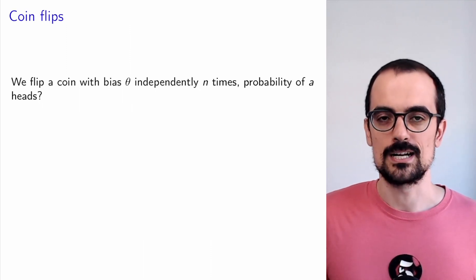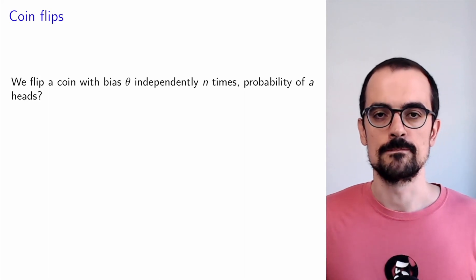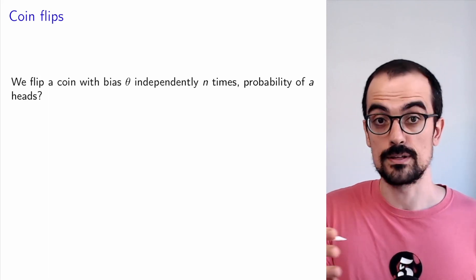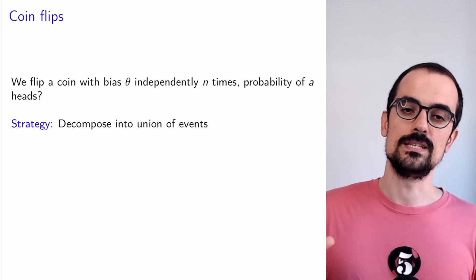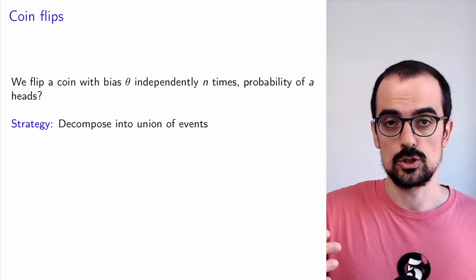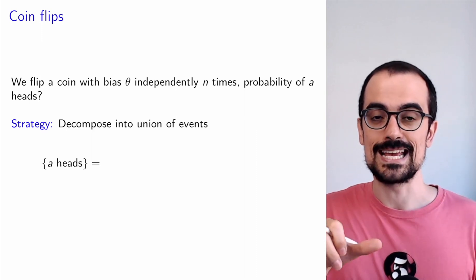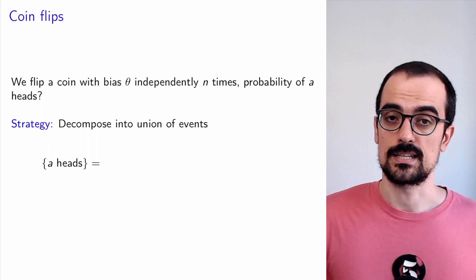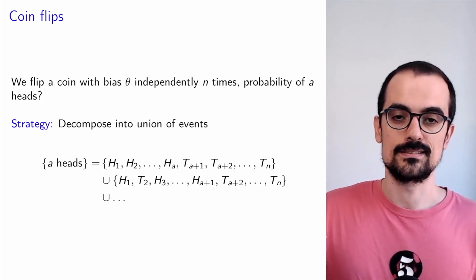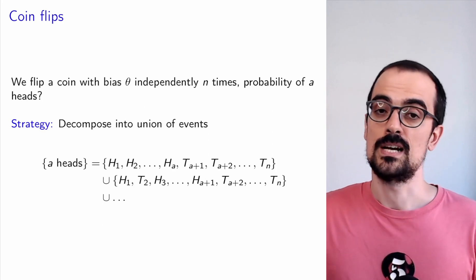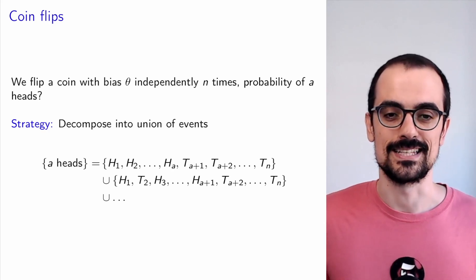Now let's talk about the binomial random variable. To motivate it, imagine that you flip that coin n times independently. Each coin flip is heads with probability theta and all the flips are independent. What is the probability of observing a heads? Our strategy is to decompose that event into a union of other events — we want to see what the probability is of observing a heads and n minus a tails, and consider all the possible orderings.